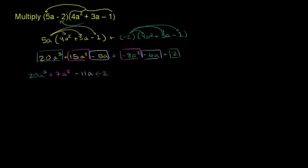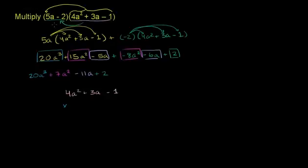Now I'll show you another way to get this exact same answer — we are done and have combined all like terms. This other way is essentially just doing the distributive property twice, but more analogous to how we actually multiply numbers. We take 4a squared plus 3a minus 1 and multiply it by 5a minus 2. The places here are powers of a: the a to the 0 power space instead of the ones place, a to the first power instead of the tens place, and a squared instead of the hundreds place.